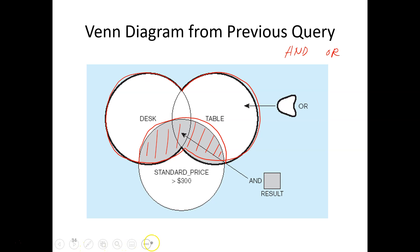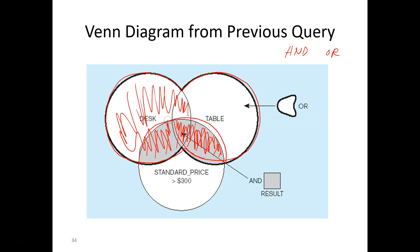The SQL statement will first process product description LIKE '%table' AND standard price greater than 300 — that would give us tables greater than 300 dollars. Then it will process OR, which is product description LIKE '%desk', and it will add all desks. Since it's an OR, it will include everything in the desk set plus whatever is in the previous result. So as you can see, if you forget the parentheses the result will be very different.